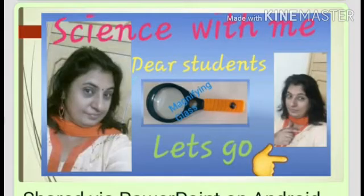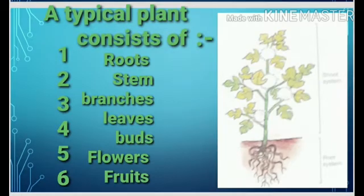As you know, a typical flowering plant consists of the following parts: roots, stem, branches, leaves, buds, flowers, fruits, and one more that is missing — let me give you a clue — it is responsible for producing a new plant. So these are all the important parts of a flowering plant.